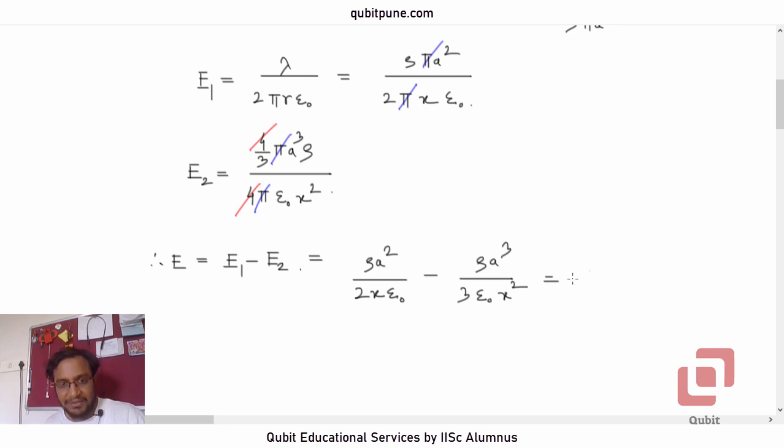Can we take rho A squared common? Yes, we can, and also epsilon naught. So rho A squared by epsilon naught into bracket 1 upon 2x minus A upon 3x squared.